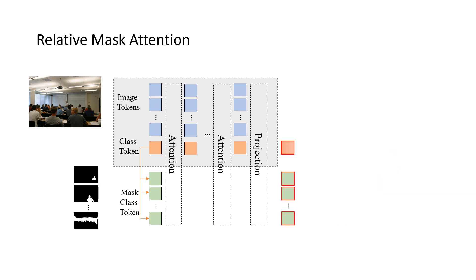To further utilize detailed mask information and produce refined masks, we propose the Relative Mask Attention module. This module shares a similar idea with using attention for image segmentation, utilizing the information of the attention mask to obtain the image mask. In general, we use the mask information to add more details to the self-attention layer and in turn use the information from the attention layer to refine the masks.